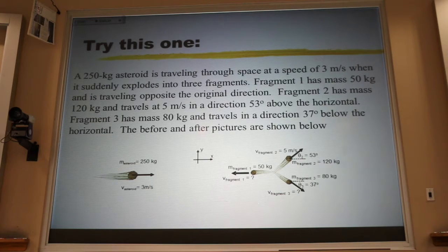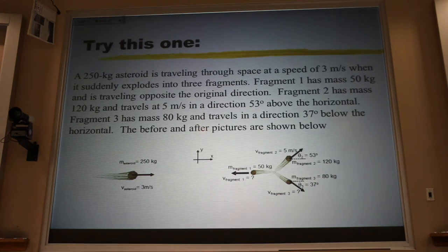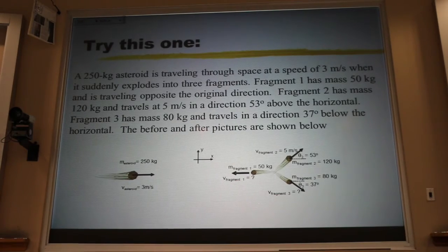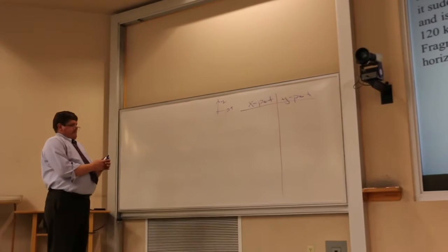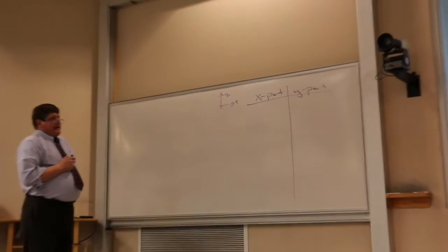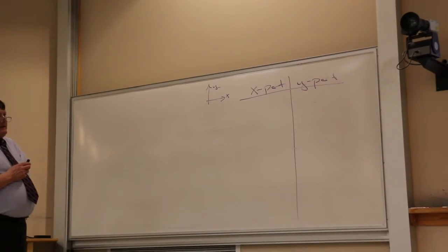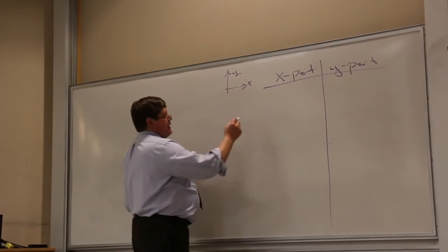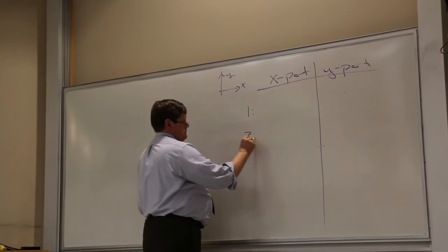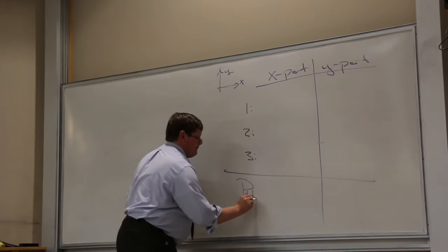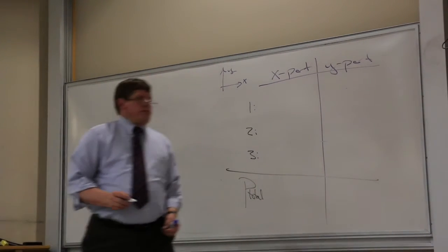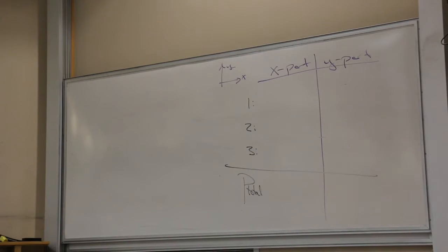Now, I'm going to need this table. If I add up the momentum of all of the fragments, that's going to give me the total momentum of the system. The total momentum of the system can't change. That means it's got to be the momentum that this asteroid had before the explosion.